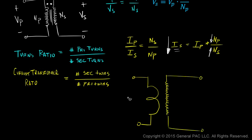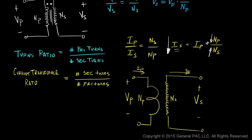A better representation of a current transformer shows the primary voltage, a small number of primary turns, primary current, a much larger number of secondary turns, secondary voltage, and secondary current. In this example, we have only two turns for the primary winding and many more turns for the secondary winding. This is a current transformer.